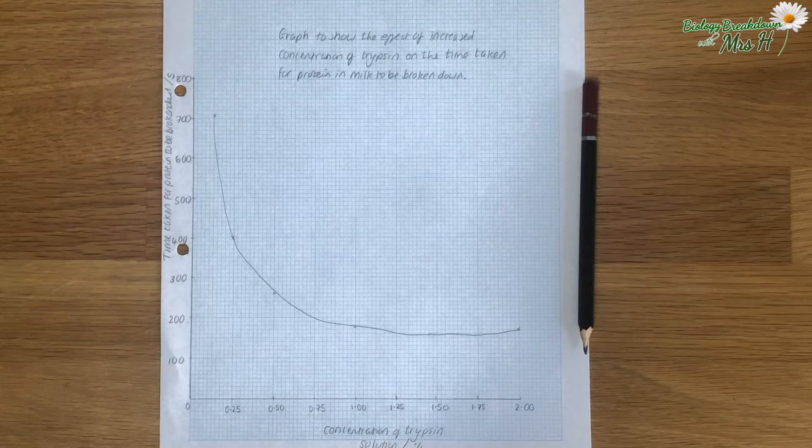The reaction can only go as fast as whatever is in the least supply so you can increase the enzyme concentration and keep increasing but if there's not a high enough substrate concentration that is going to limit how quickly the product is going to be made or the substrate is going to be broken down.